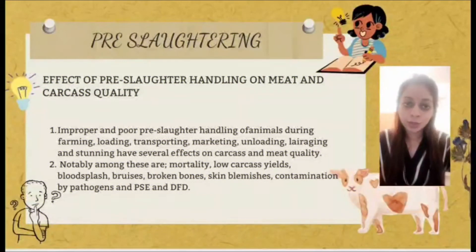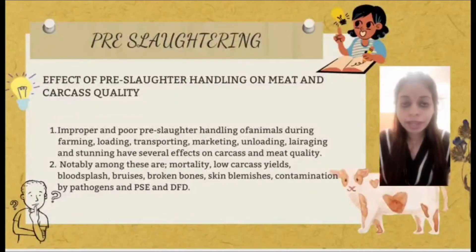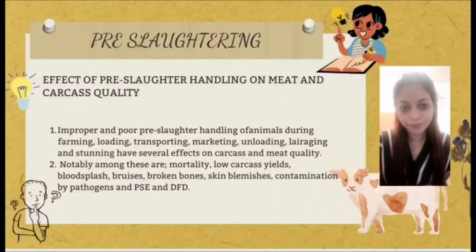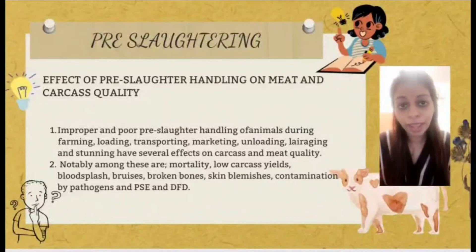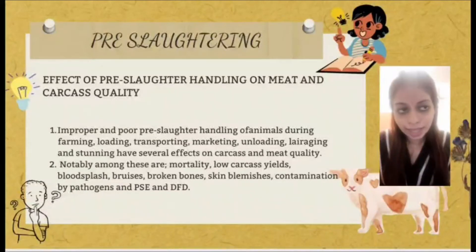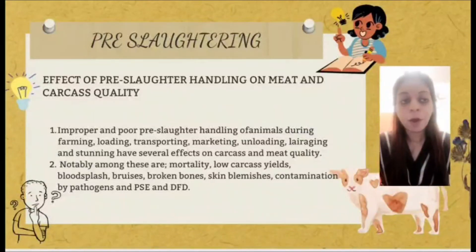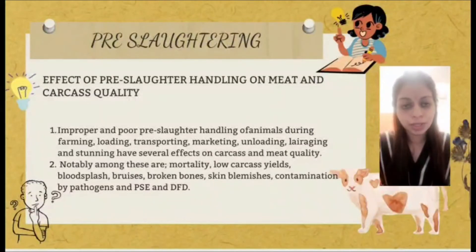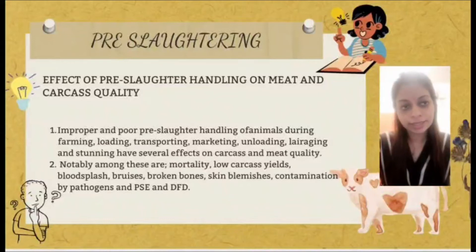Moving to the next slide, which covers pre-slaughter effects of handling on meat and carcass quality. Improper and poor pre-slaughter handling of animals during farming, loading, transporting, marketing, unloading, and stunning have several effects on carcass and meat quality. Among these are mortality, low carcass yields, blood splash, bruises, broken bones, skin blemishes, contamination by pathogens, and PSE and DFD conditions.